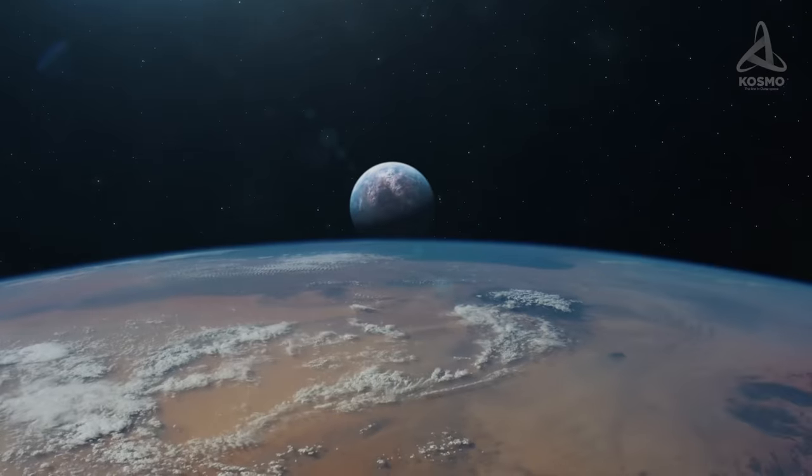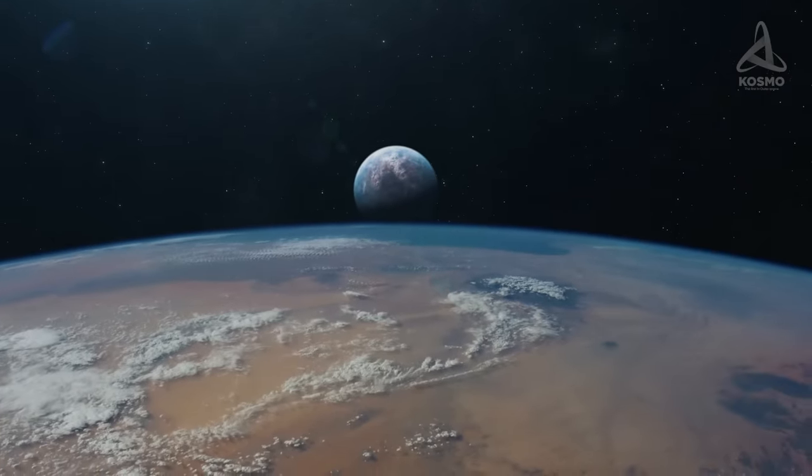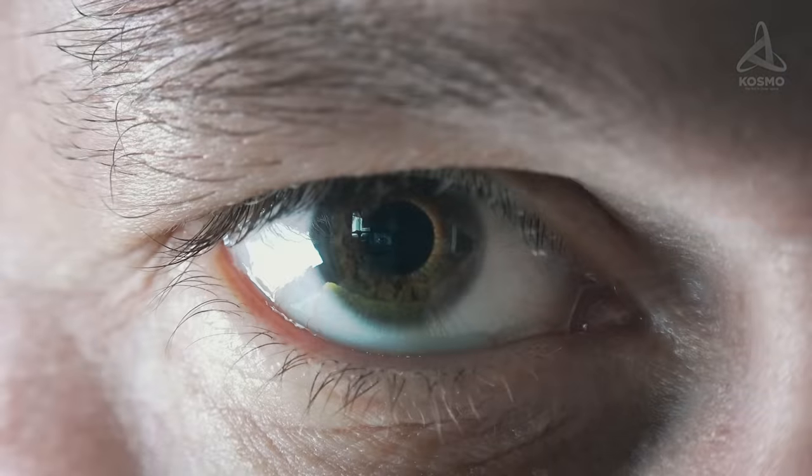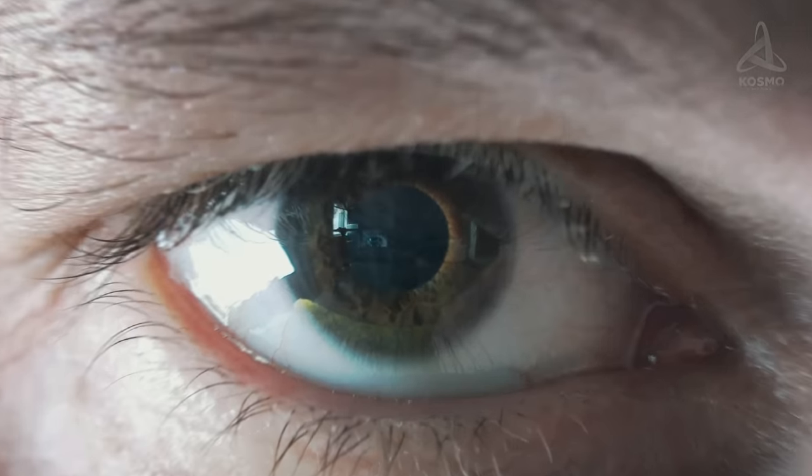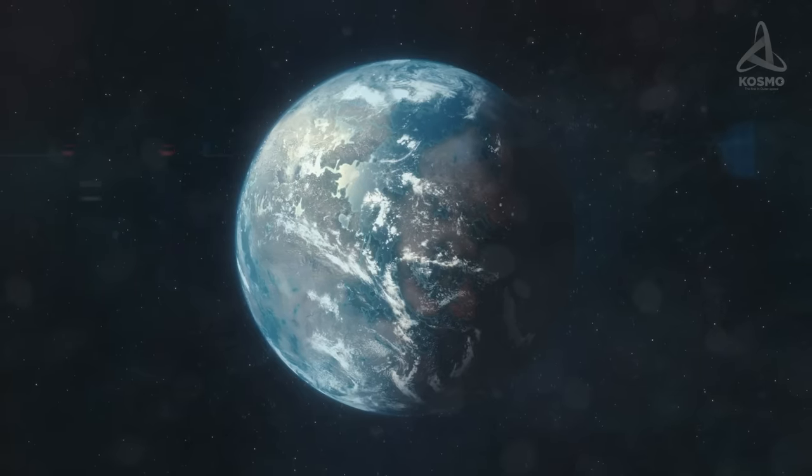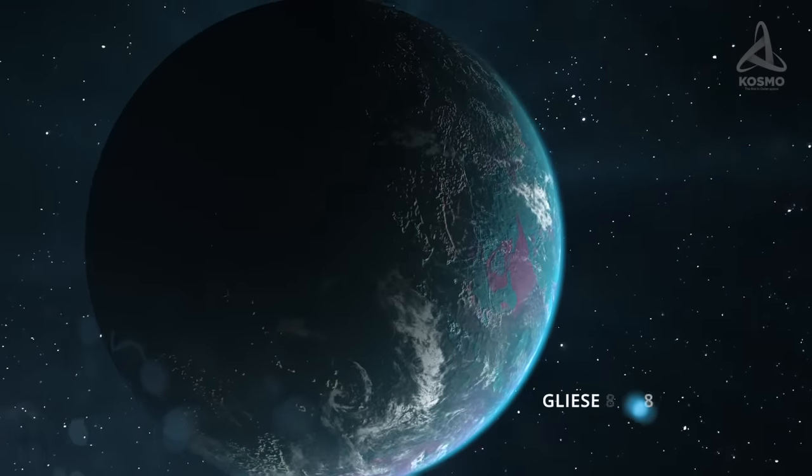There are among exoplanets those that may realistically harbor life. There are dozens of these objects scattered in space and they understandably draw scientists close attention. Today, we are going to look at one of these objects, which is an exoplanet dubbed Gliese 832 C.